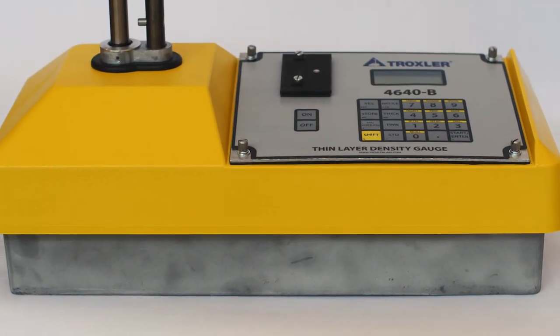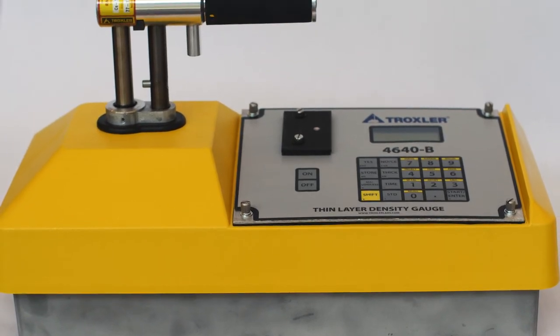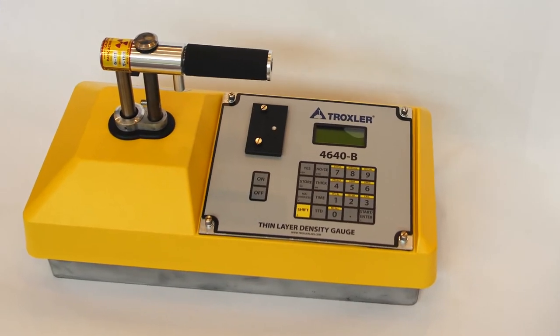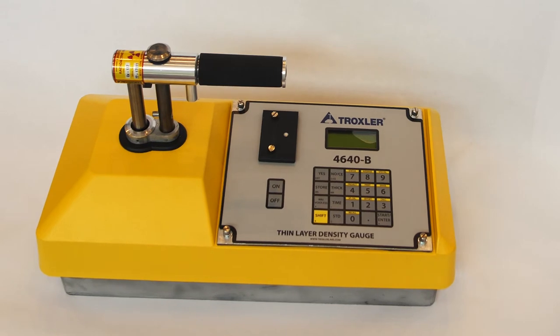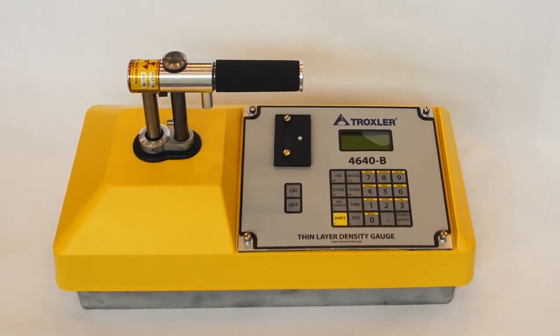Recognizing the need for an improved method of measuring the density of thin layer asphalt overlays, Troxler developed the first true thin layer gauge, the 4640B Thin Layer Density Gauge.